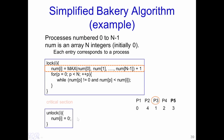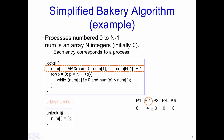Process p3 executes in the critical section and at the end sets its corresponding value to 0. Then the next lowest number, corresponding to p4 with value 2, gets to execute. After p4 finishes, its number is set to 0, then p5 executes, and then p2 executes, as it is the only remaining non-zero number. After p2 execution, all values of num are back to 0.